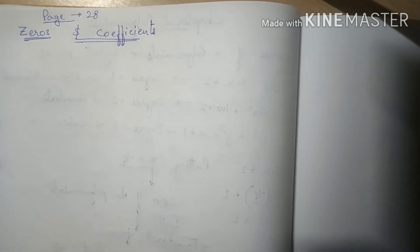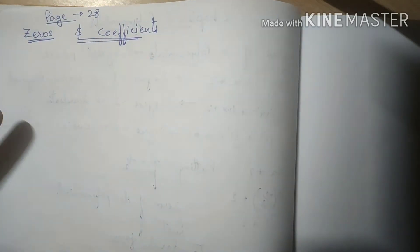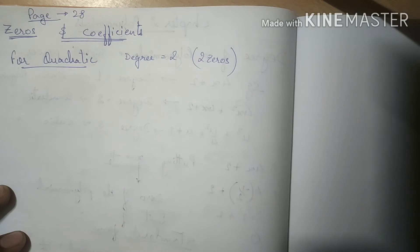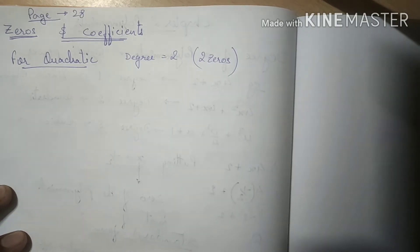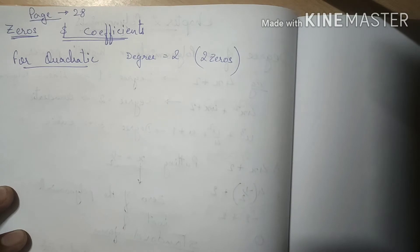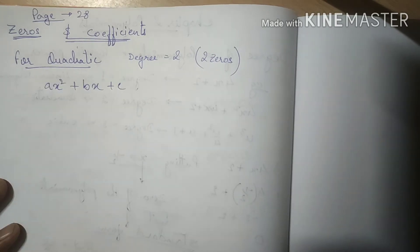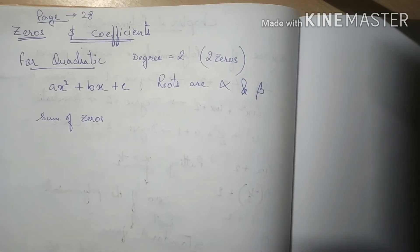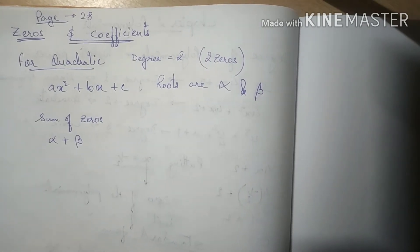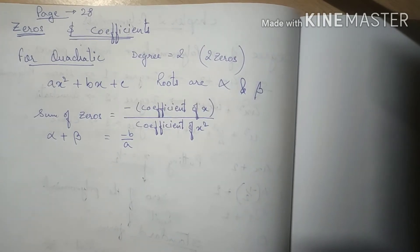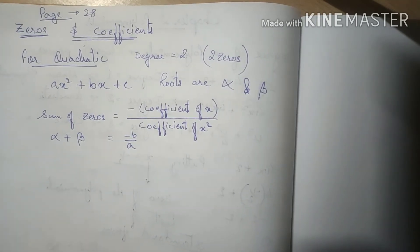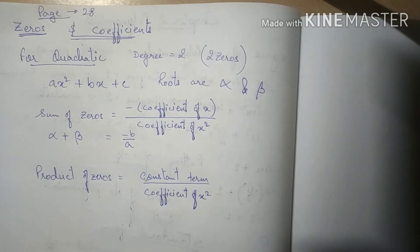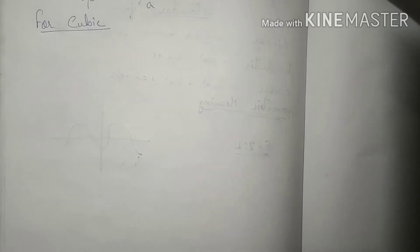Now we have seen the relationship between zeros and degree. Let's explore the relationship between zeros and coefficients, starting with quadratic equations. Since degree is 2, there are two zeros — let them be alpha and beta. The sum of zeros is alpha plus beta, which equals minus b by a, that is, minus of the coefficient of x divided by the coefficient of x squared.